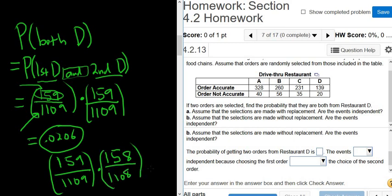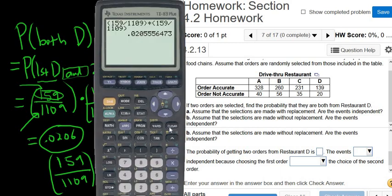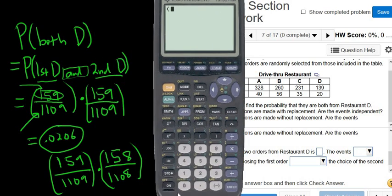And then this will become 1108. So this here, this is the without replacement part, right? So you take an order out. So you're missing one. So you go from 159 to 158. Likewise, you go from 1109 to 1108. So let me type that in. So it's parentheses, 159 divided by 1109 times, and then 158 divided by 1108. Then enter.